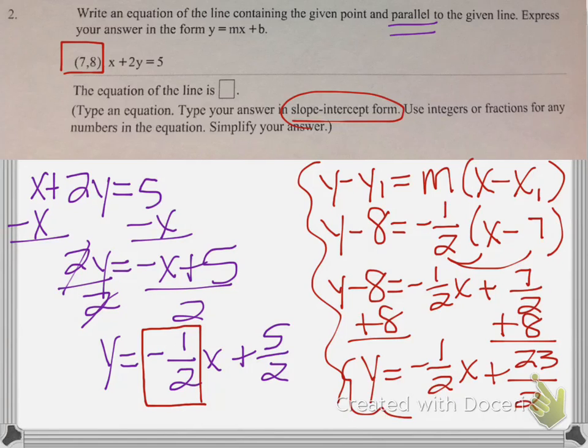And that is an equation of a line that is parallel to the line that they gave us, but goes through the point 7, 8. So far, so good? Go ahead and ask questions when you need to, okay? Or if we need to pause and look at it a little bit longer, just let me know.